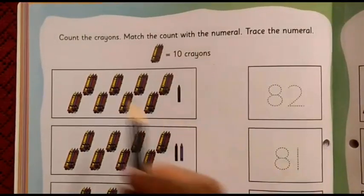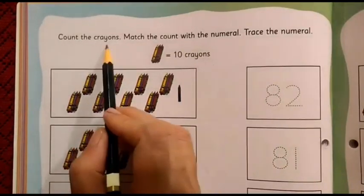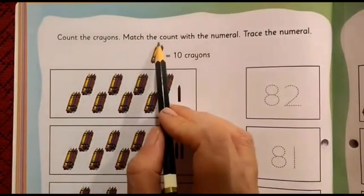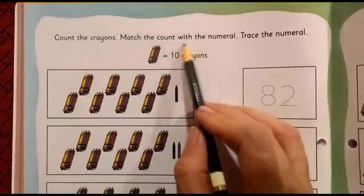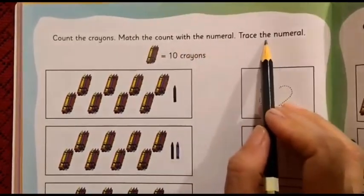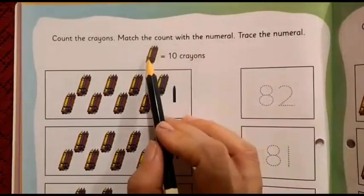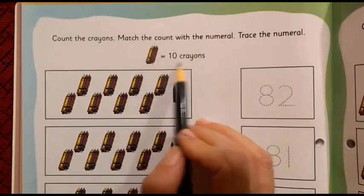Now, I will read the instructions for you. Count the crayons. Match the count with the numeral. Trace the numeral. And one bundle means 10 crayons.